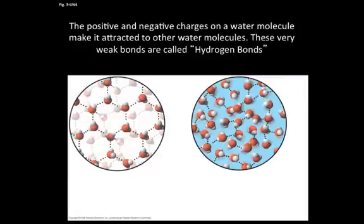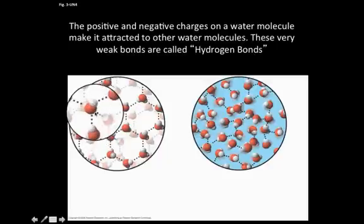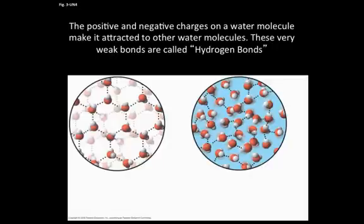The positive and negative charges on the water molecule make it attracted to other water molecules. These very weak bonds are called hydrogen bonds. Those bonds are denoted by these dotted lines here. Hydrogen bonds are weaker than both covalent and ionic bonds, but they are a force of attraction in this case between water molecules.